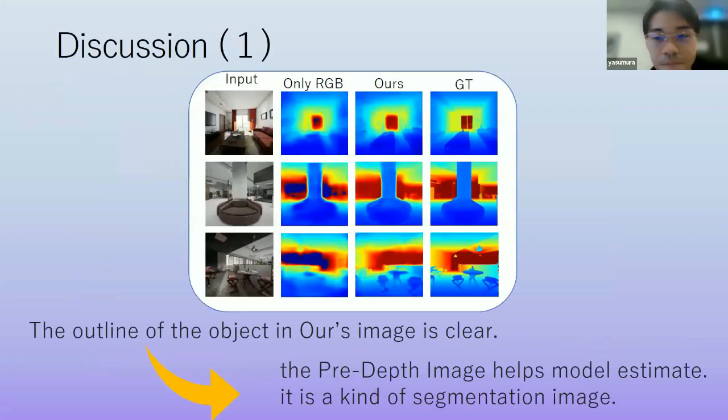From this point, we will discuss about the experimental results and current limitation and improvement. This figure shows generated image by baseline model and our method and the ground truth image. Looking at generated image, the outline of the object in our method image is more clear than baseline model. This may be because the pre-depth image helps model estimation simply. And pre-depth image is one kind of segmentation image. So it might be helpful for generating more clear images.